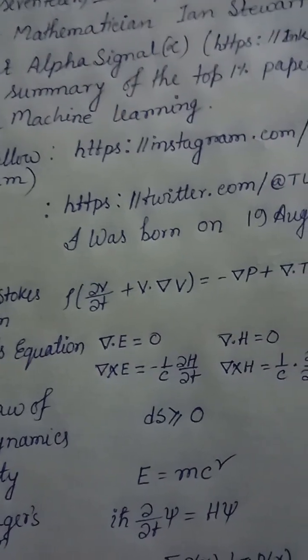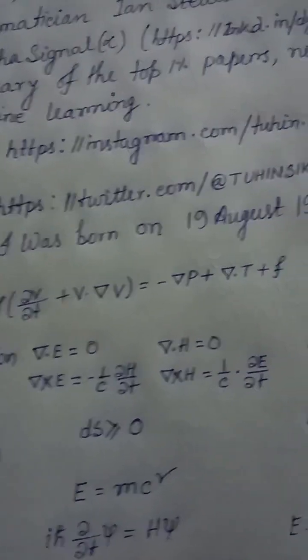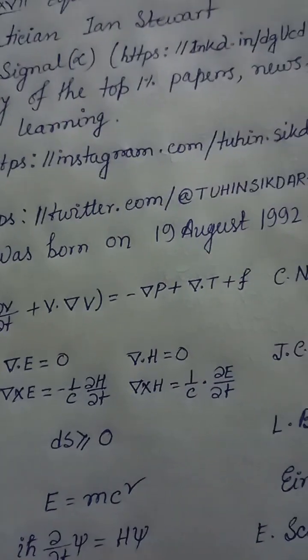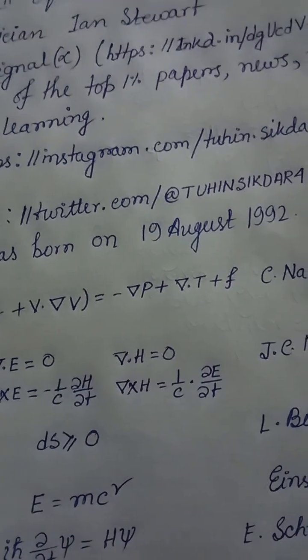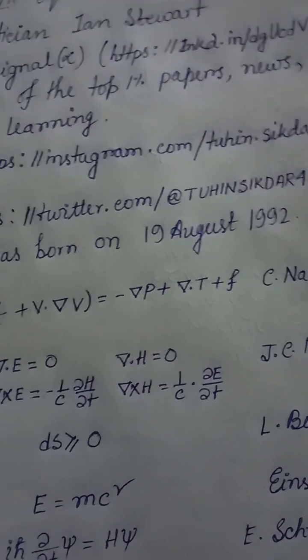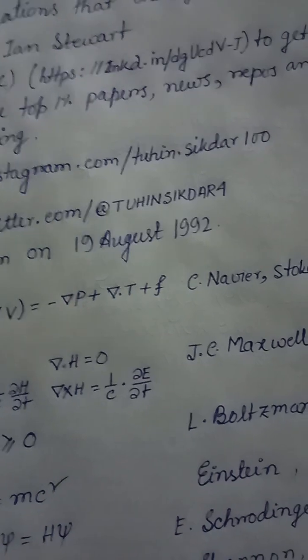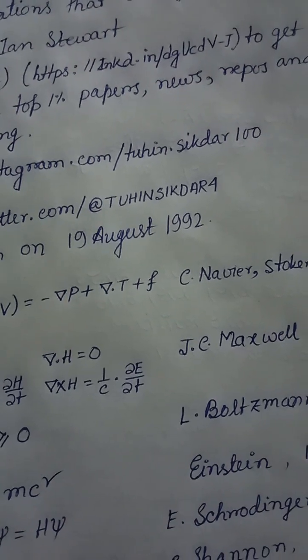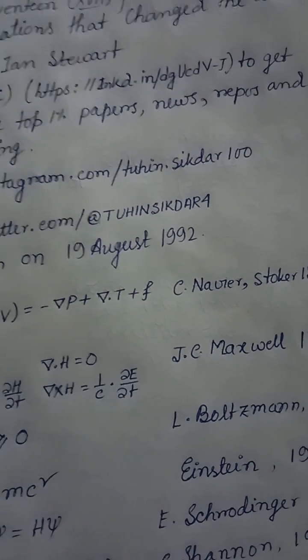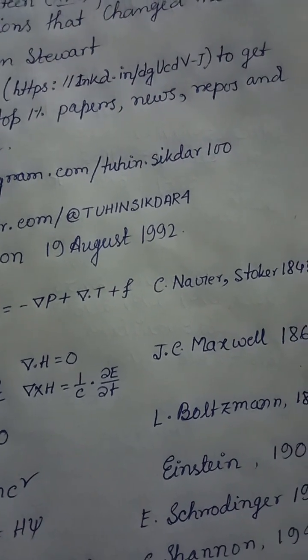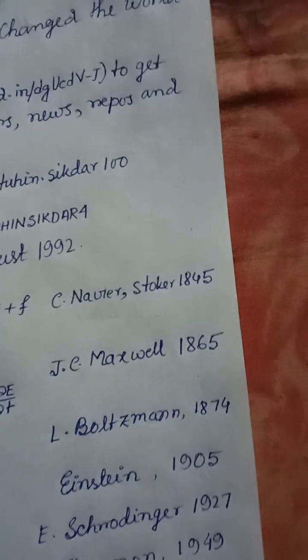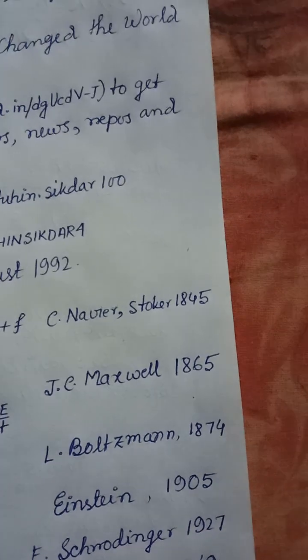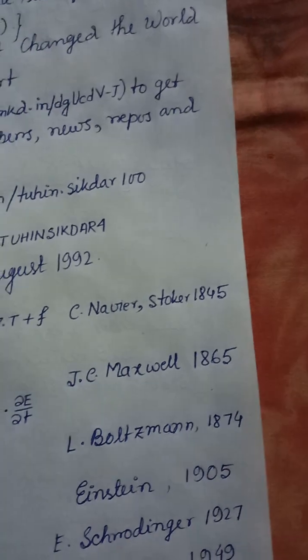Equation 11: Maxwell's equations — ∇·E = 0, ∇×E = −(1/c)·∂H/∂t, ∇·H = 0, ∇×H = (1/c)·∂E/∂t, J.C. Maxwell, 1865.